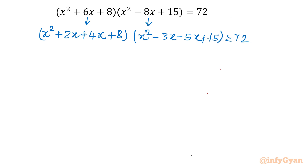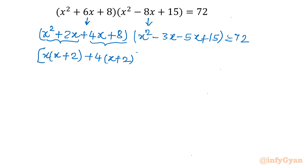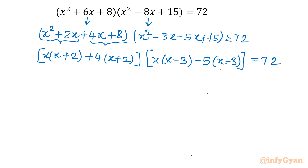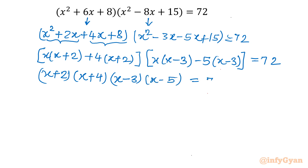Now from the first two terms I will take x common, giving x(x + 2). Then I take 4 common, giving 4(x + 2). Because x + 2 appears twice, I can factor the first bracket as (x + 2)(x + 4). In the second bracket, taking x common from the first two terms gives x(x - 3), and taking -5 common gives -5(x - 3). So the second bracket factors as (x - 3)(x - 5). Our equation is now converted into a simple product form of degree-1 factors.